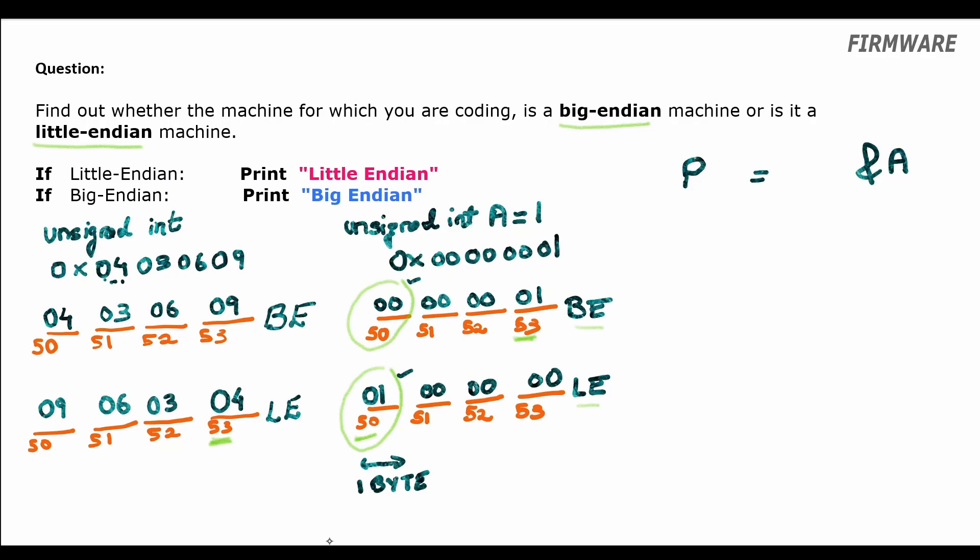In C language, we can use the character data type. Therefore our pointer will be character data type pointer. So we store the address of the variable a by casting it to a character type pointer p. Alright, now it is straightforward. We will check the content of the address p.